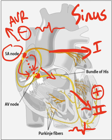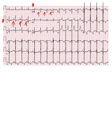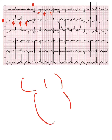This shows an EKG with a normal sinus rhythm. This is Lead 2 and this is Lead AVR. Look at those P waves — they are positive in Lead 2. Look at those P waves — they are negative in AVR. This confirms that this is a normal sinus rhythm, where electricity is going from the sinus node to the AV node.